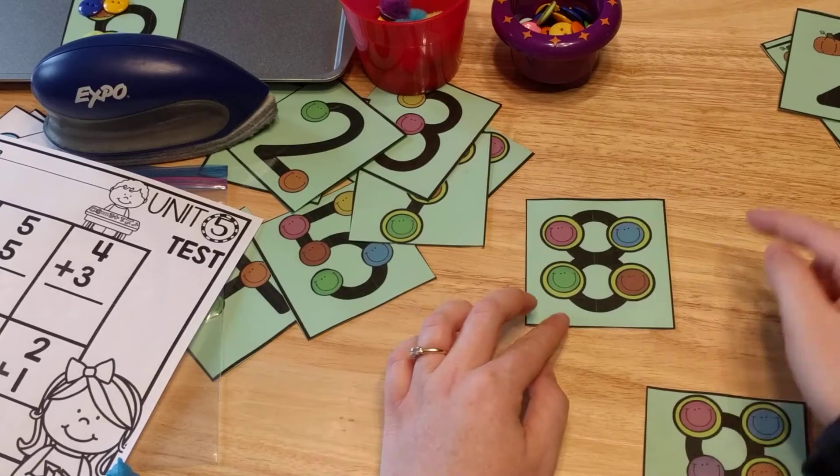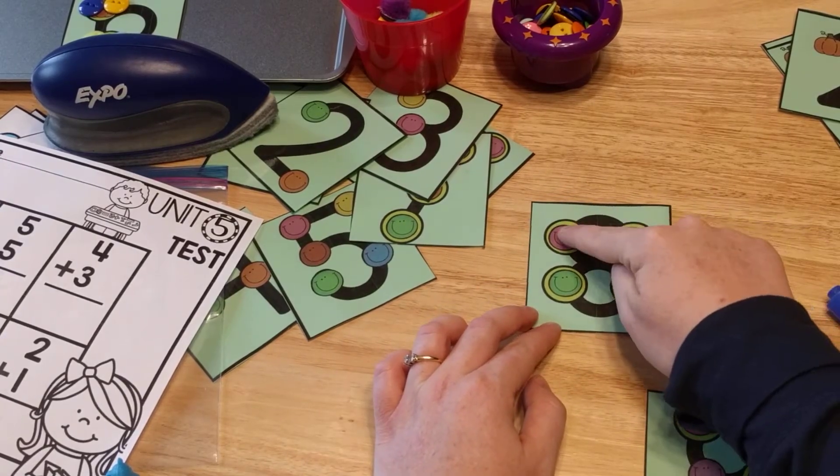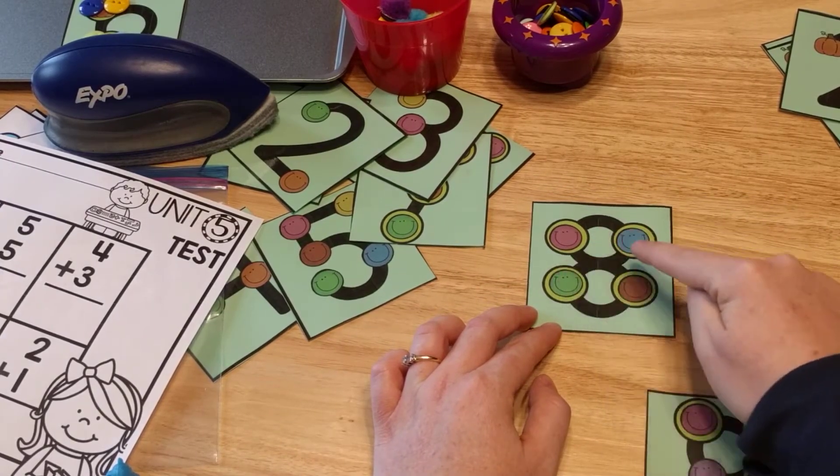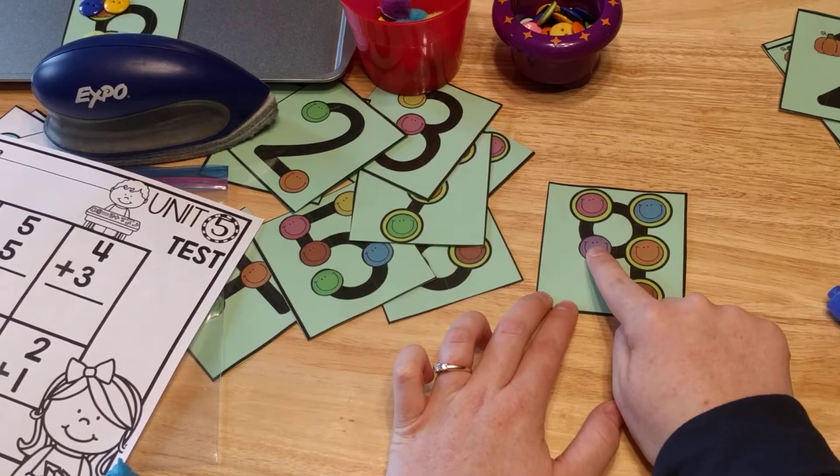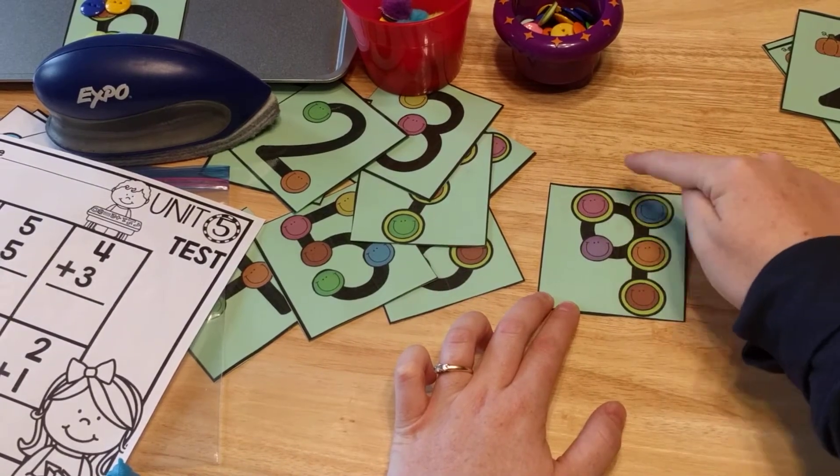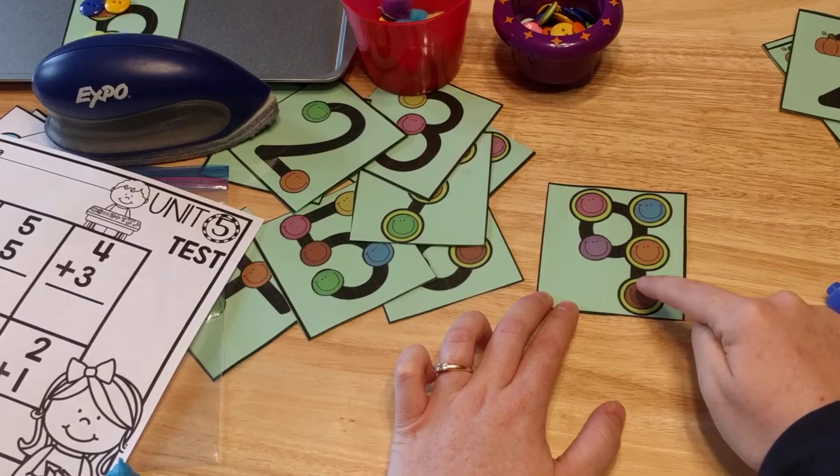The number eight looks like this. One, two, three, four, five, six, seven, eight. And then the number nine has one, two, three, four, five, six, seven, eight, nine.